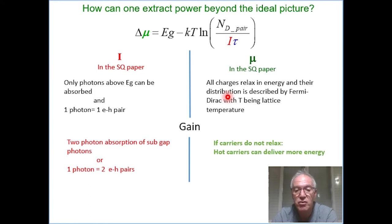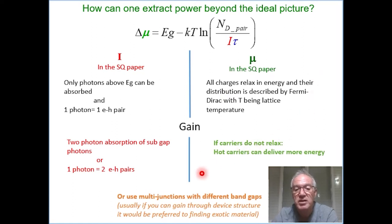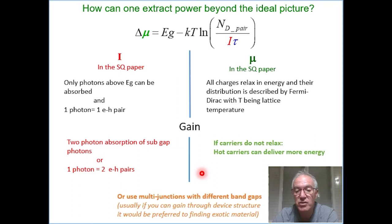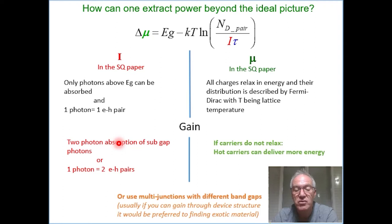This would look like breaking the efficiency limit, and the same thing is about hot carriers. But these things look exotic. There are other ways that you could break the limit that for some reason people don't refer to as breaking the limit — you can use multi-junctions, as many people do these days, and you break the limit for a single junction. Basically all these exotic material approaches can be realized with smart device engineering, and history tells us that device engineering is usually easier than finding an exotic material that will make it to the device.